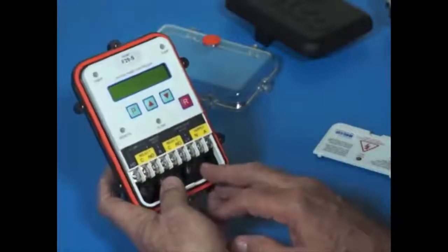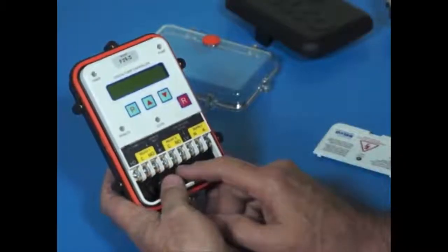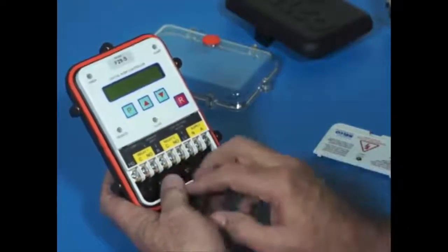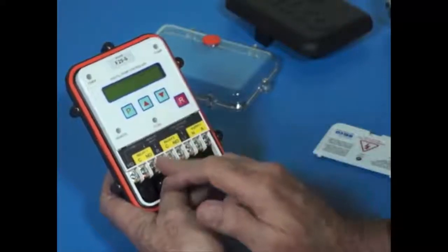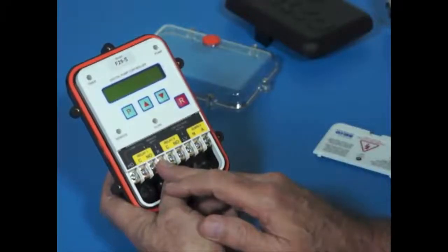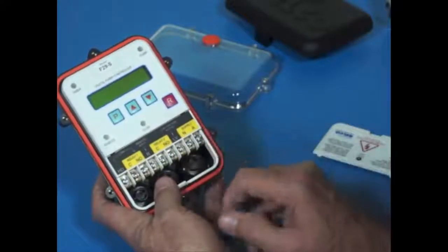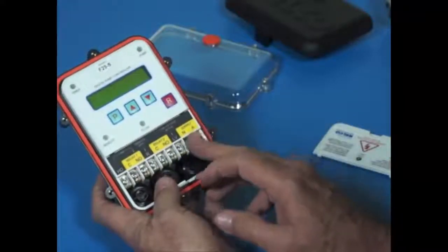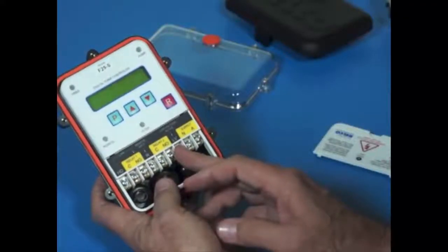The F29 also includes a remote input. You can bring a remote input from a tank level switch or a pressure switch into the F29 using the remote input terminal here, and you can power that external switch through a take-off from the low voltage active terminal. So if you're running the F29 from the mains, 240 volts or 220 volts, you will have 24 volts AC available here at the low voltage active terminal and that can be used to switch a signal back into the remote input terminal.